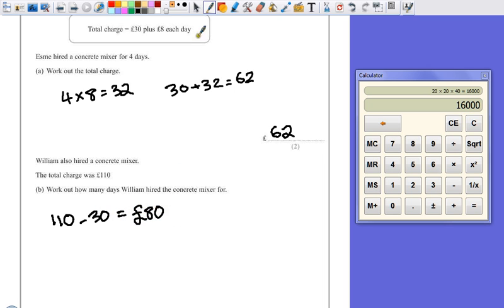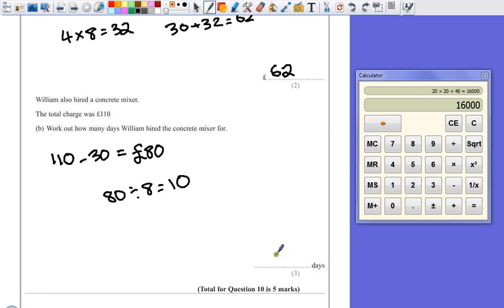He paid £80 for the hire, and it's £8 a day. So £80 divided by the £8, just to work backwards, is £10. So that means he must have hired it for 10 days.